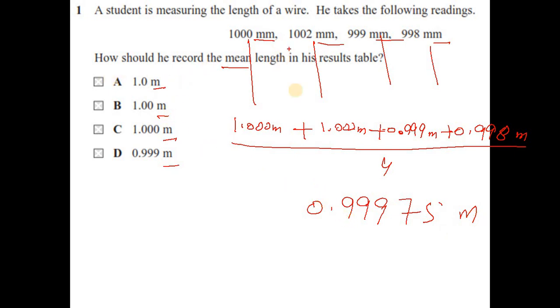Of course, if you see all the data set has 3 decimal places. And we are adding all the numbers. So our final answer should include 3 decimal places. So we cannot have option A and B. What about C and D? Both have 3 decimal places. But due to this 7.5, when you round this off, you have more than 0.999. So you round it off to 1.000. So your option is C.